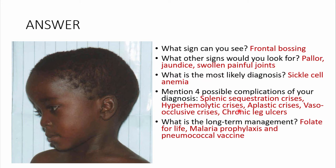For long-term management, we give folate because of the chronic hemolysis driving extramedullary hematopoiesis. We give malaria prophylaxis — usually Deltaprim, which is pyrimethamine. These children undergo autosplenectomy and are at higher risk of encapsulated organism infections, so we give the pneumococcal vaccine. They are not susceptible to Plasmodium falciparum but can contract Plasmodium malariae, ovale, or vivax, and those infections tend to be severe.